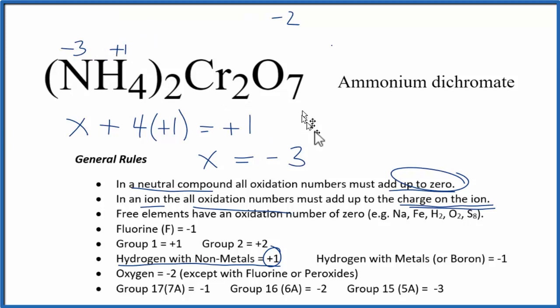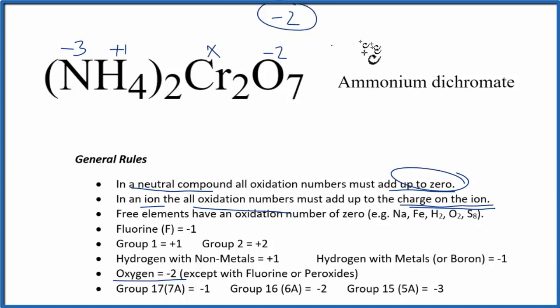Let's do the chromate. We said if we add up all the oxidation numbers for these, it'll equal the ion, this minus two. We don't see chromium here on our list, but oxygen is going to be minus two except with fluorines and peroxides. So that's going to be oxidation number of minus two. We don't know chromium. It's all going to add up to this minus two here.